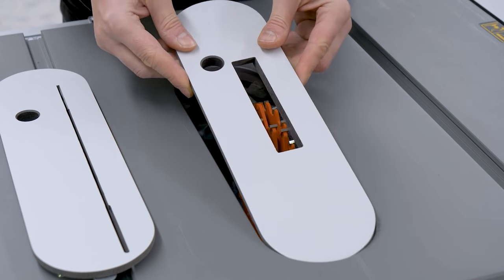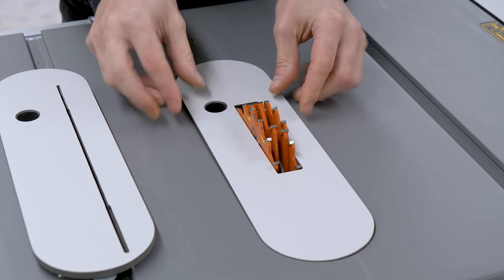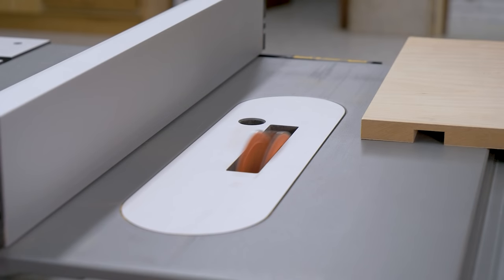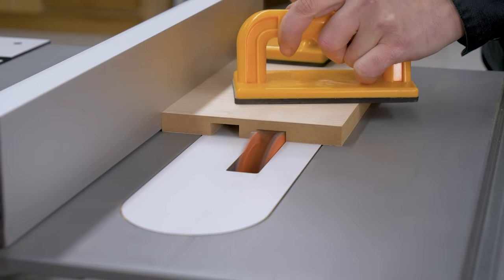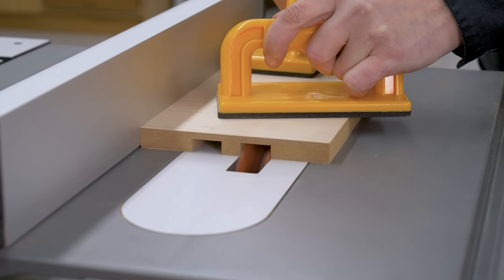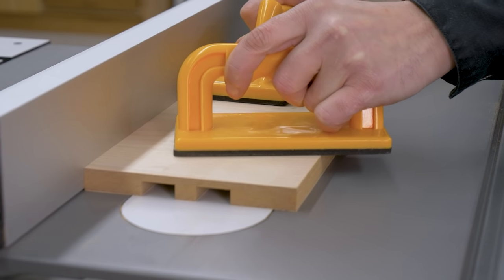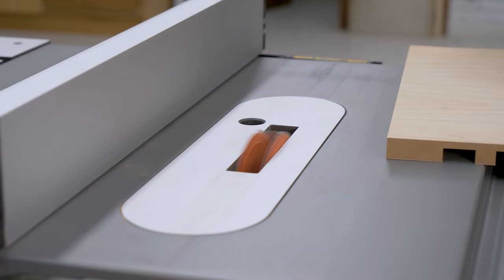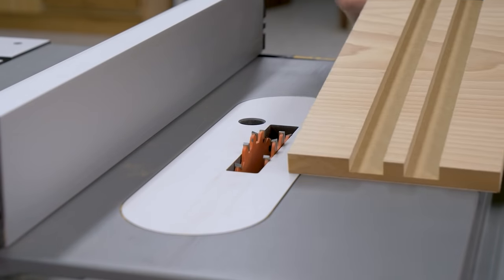As you can see, I've made a zero clearance insert for use with the dado blade. Thanks to its small diameter, it's much lighter than other dado blades, and like earlier, this will allow me not to push the motor and shaft so hard. Keep in mind that when we use all the blades and spacers of the dado blade, the motor will have to bear a lot more weight compared to a simple cutting blade.